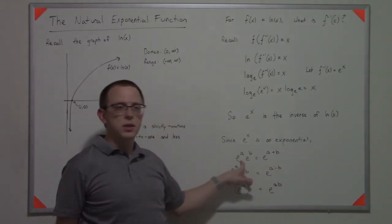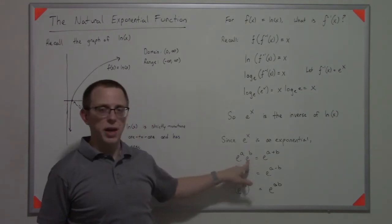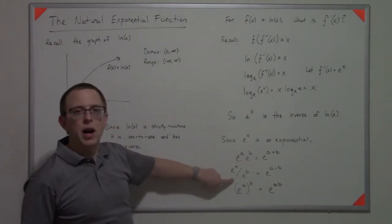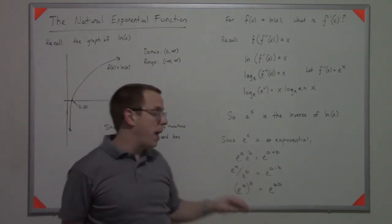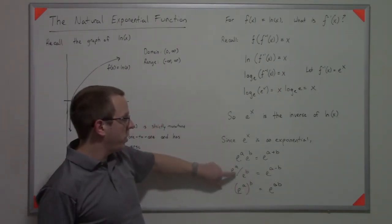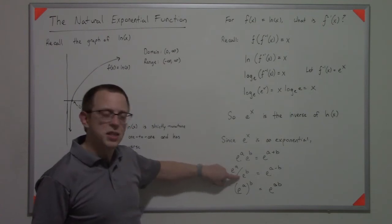If you have e to the power divided by e to another power, you can turn that into the subtraction of powers. That's really just this property with this thing rewritten with a negative exponent instead.